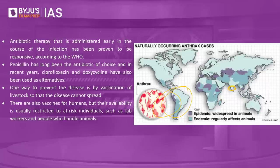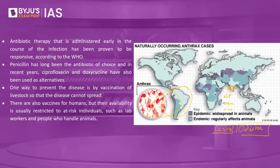Anthrax cases have been reported in Andhra Pradesh, Jammu and Kashmir, Tamil Nadu, Odisha, and Karnataka. In 2014, cases were reported in Jharkhand, killing as many as 10 people. In Odisha's Karaput district, more than 300 people were infected and this also claimed the lives of 10 people.